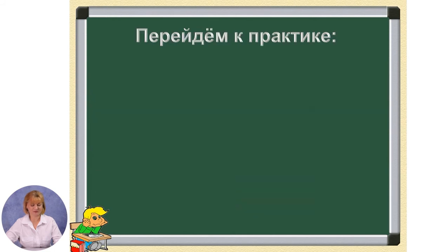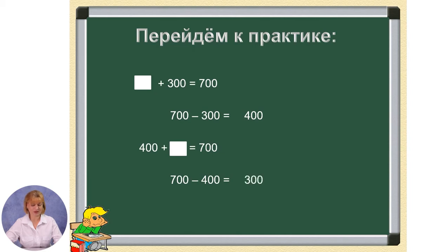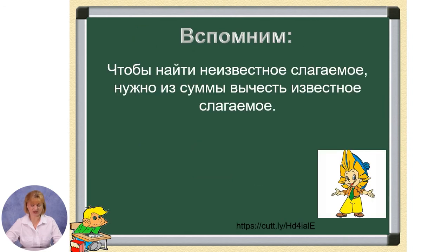Перейдем к практике — let's move to practice. Чему равно первое слагаемое, если сумма равна 700, второе слагаемое — 300? — What is the first addend if the sum equals 700 and the second addend is 300? 700 минус 300 равно 400. Чему равно второе слагаемое, если сумма равна 700, первое слагаемое — 400? 700 минус 400 равно 300. Каким действием нашли неизвестное слагаемое? Правильно, действием вычитания — by subtraction.